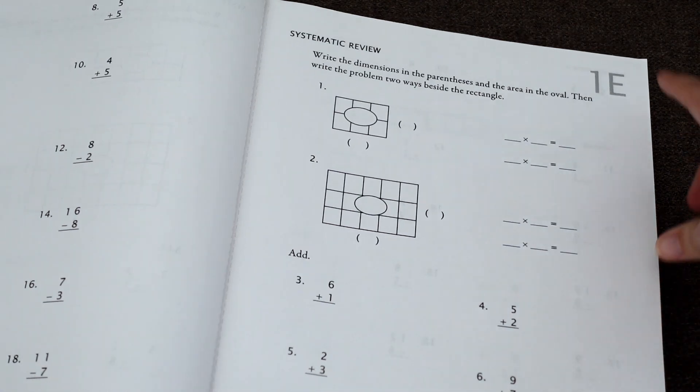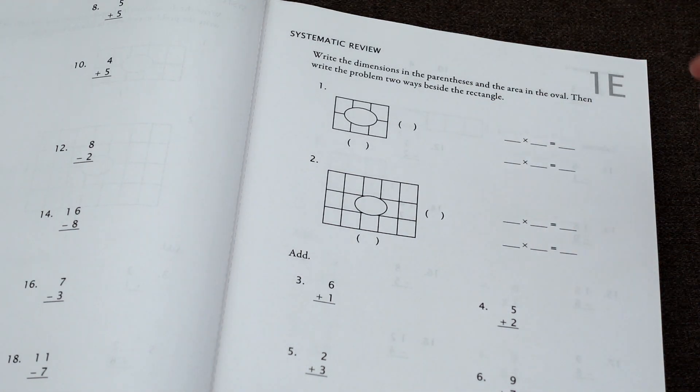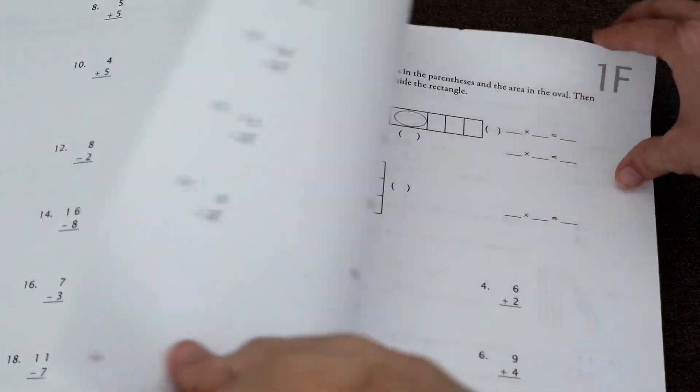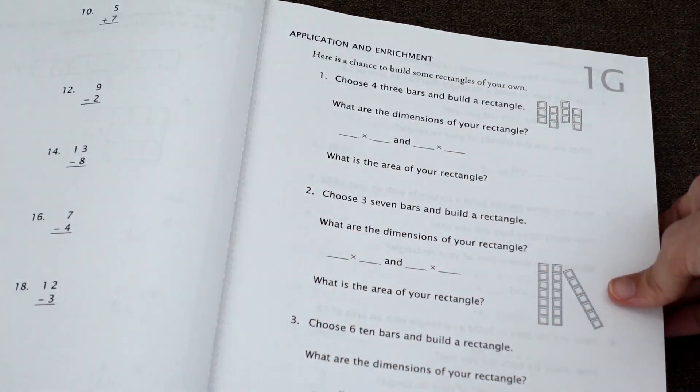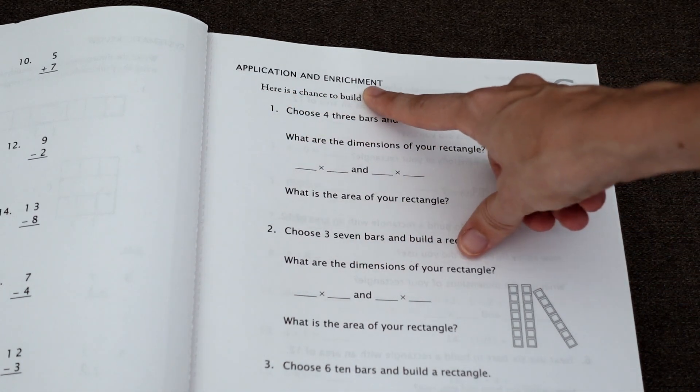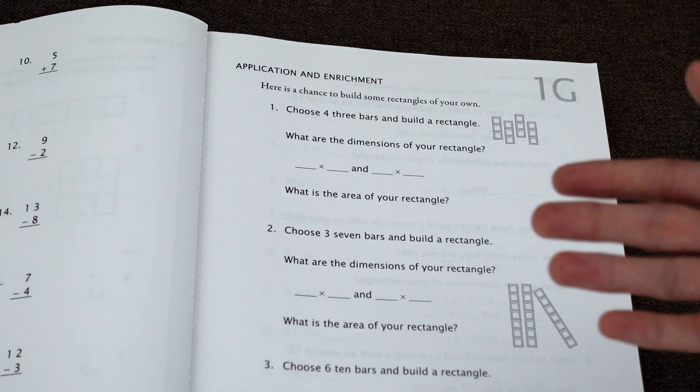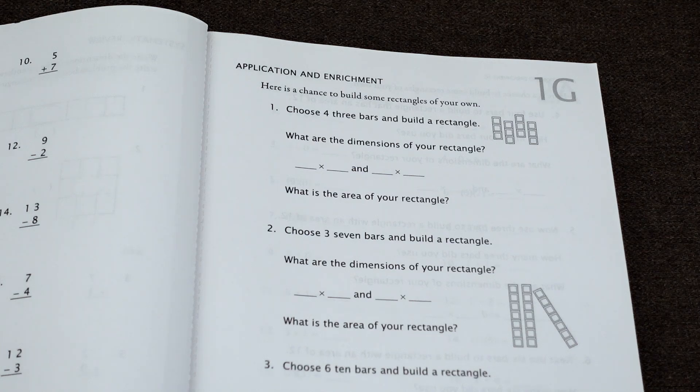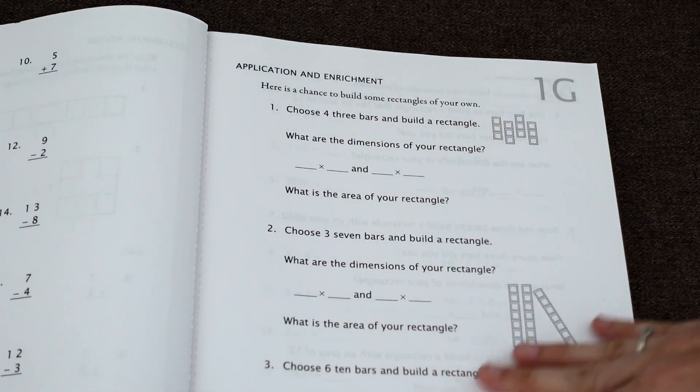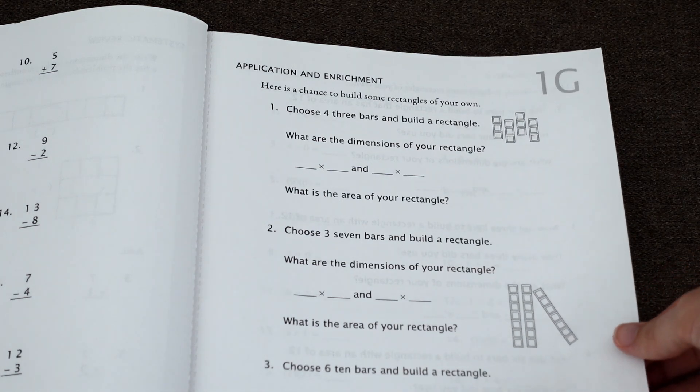So the way each lesson goes is that you have one, and it goes 1A, B, C, D, E, F, and all of those pages look pretty similar. And then we get to G, which I'm always excited to get to G because that's when you get to do something a little different. This is your application and enrichment lesson. And sometimes it's a color by number type of activity where you're solving problems and coloring it. There's dot to dots. There's interesting applied word problems. So I always appreciate the G pages.